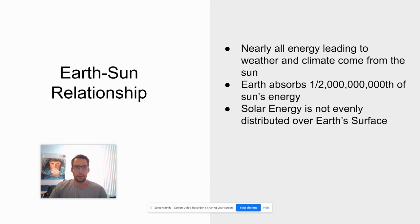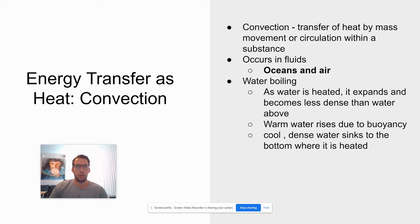But the solar energy that we get from the sun is not evenly distributed, and we'll see how that works in just a bit. What we want to talk about first is different forms of heat transfer.